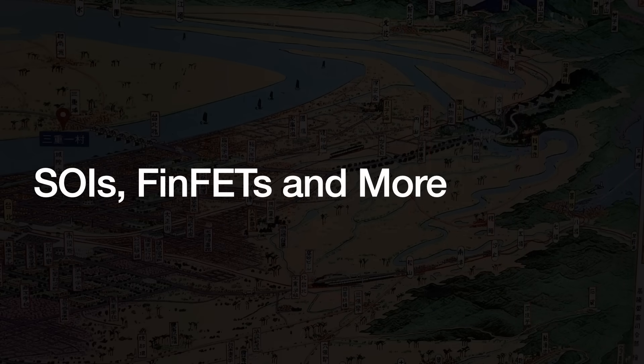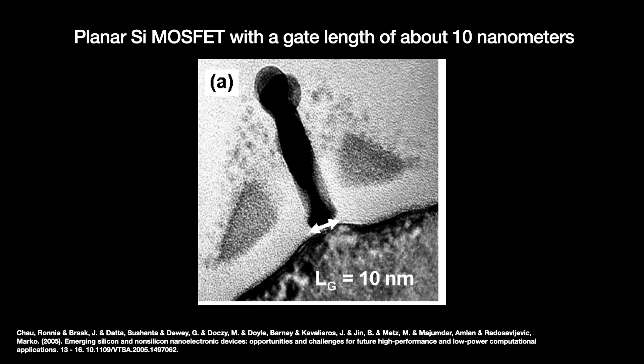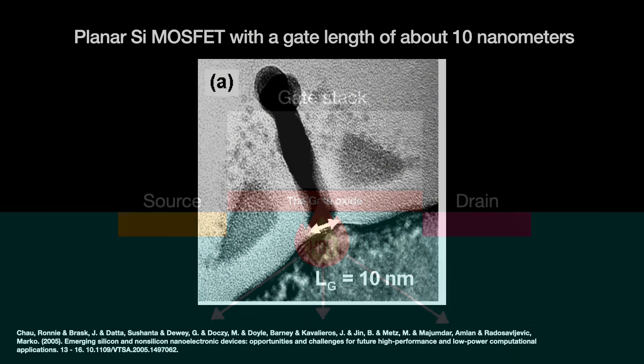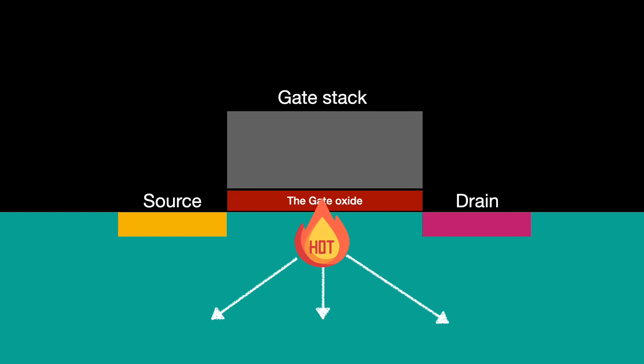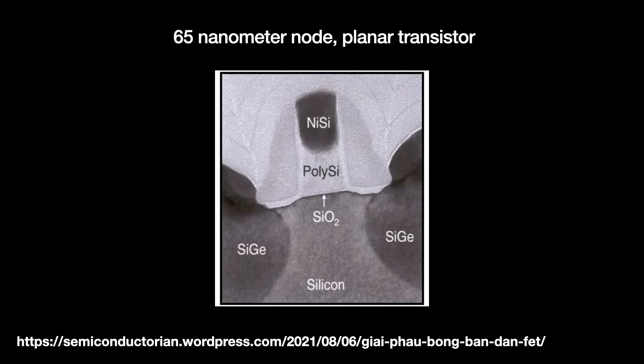Heat generated by the planar transistor's hot spots can be dissipated into the silicon substrate, where the heat can then spread towards the back of the wafer, making the silicon substrate a heat sink — and it is a critical one. With the planar transistor, dissipating heat is relatively easy because silicon conducts heat well and the whole device is laid down flat onto the substrate. There's a nice big interface for the heat to transmit down into the heat sink. But over time, the silicon industry has had to move away from this device for various reasons.